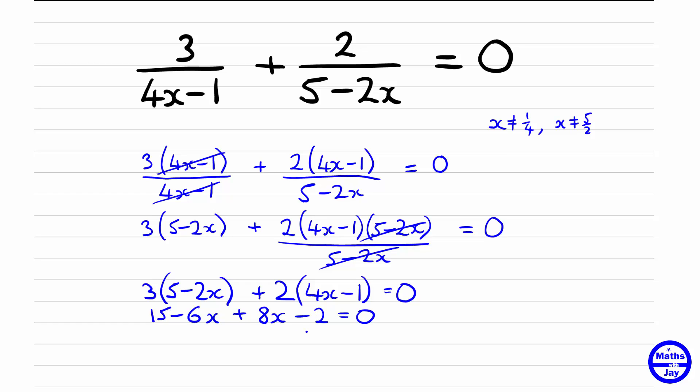So we're going to have 8x minus 6x gives us 2x, and let's take the number over to the other side, so we've got 15 subtract 2 will be 13, subtract that from both sides so it's minus 13, so x turns out to be minus 13 over 2.